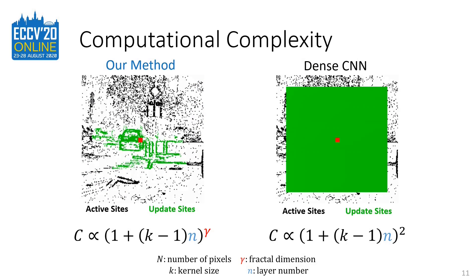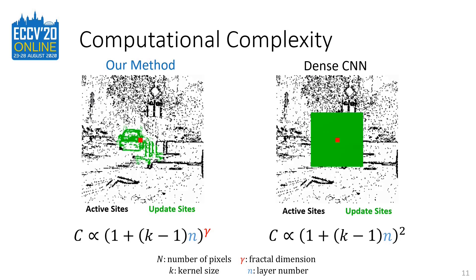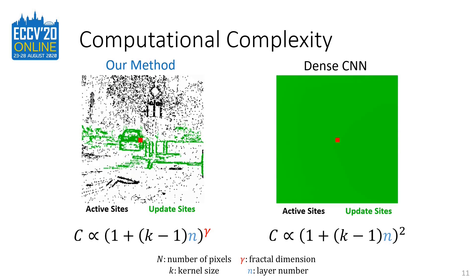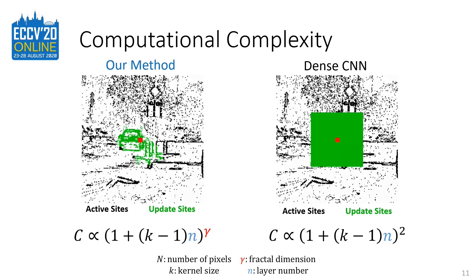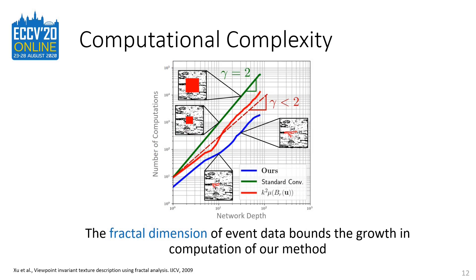In general, the number of floating point operations required by our local update rules depends on the kernel size and the network depth. For standard CNNs, the update sites grow quadratically with the network depth. In contrast, a sparse CNN only considers non-zero input sites and can thus leverage the fractal dimension of event data, which is an intrinsic property describing the growth rate of update sites. In this work, we characterize the fractal dimension of event data and show that the growth in computational complexity of our method is upper bounded by the fractal dimension. This highlights the fact that event data exists in a submanifold of the image plane, which has a lower dimension than 2.